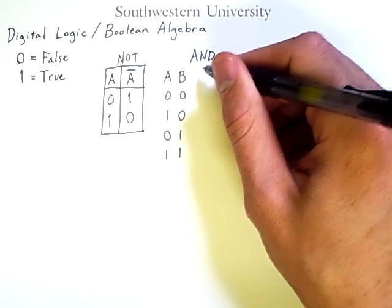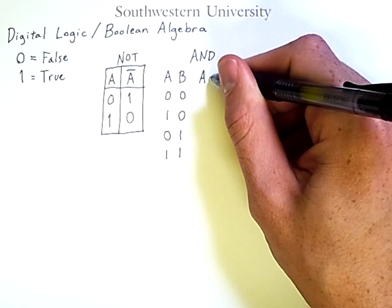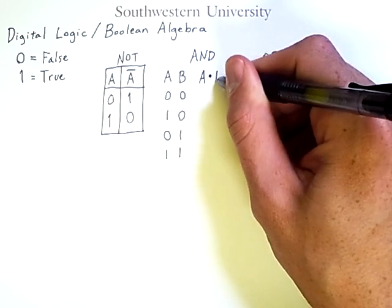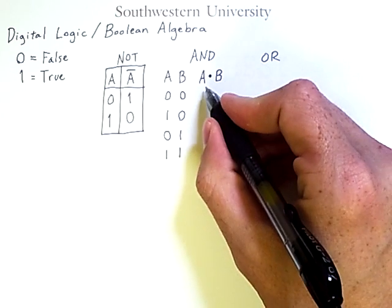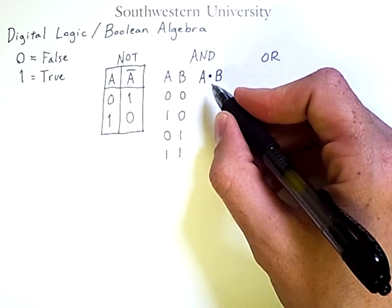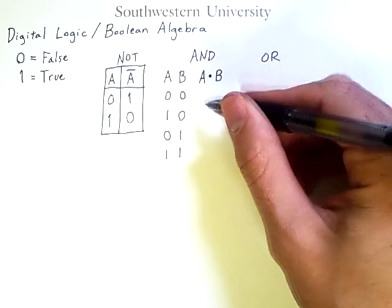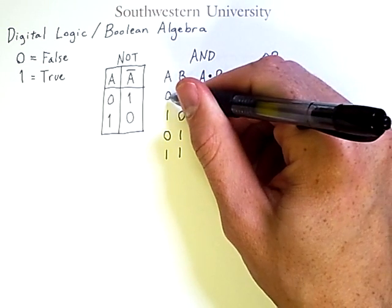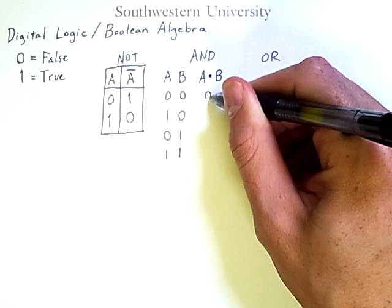Now in this class, we will denote logical AND using what looks like a multiplication operator. What this operator asks is, is it the case that both of my inputs are one? That means that if both are false, the answer to that question is false, and I put a zero here.